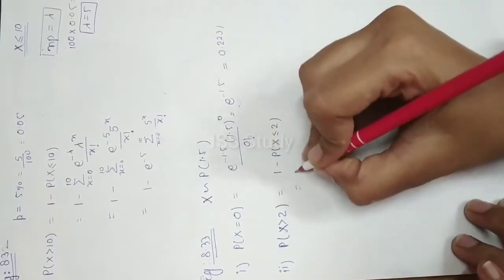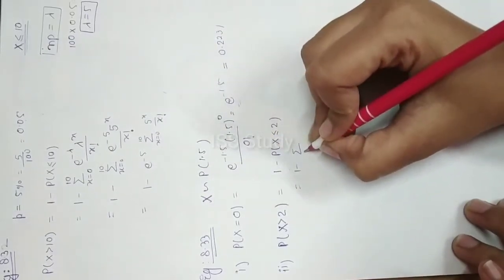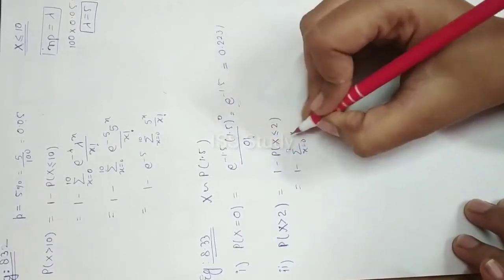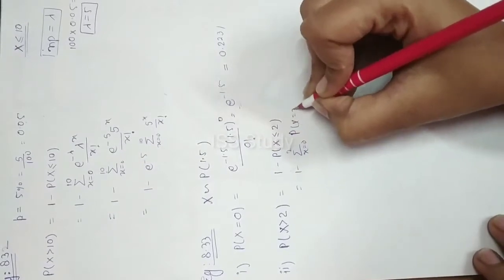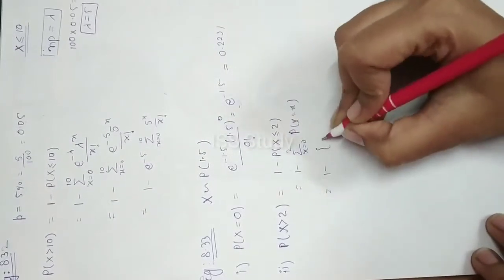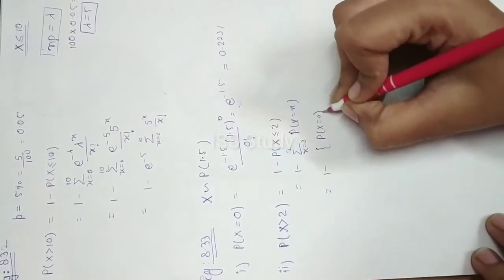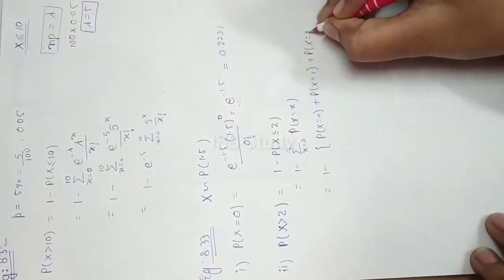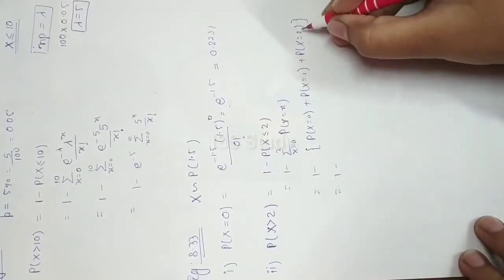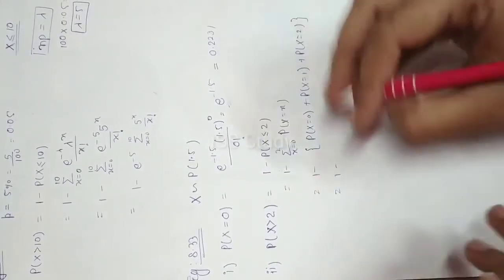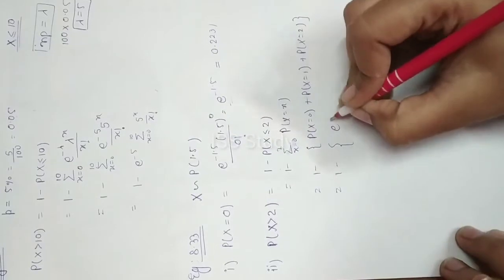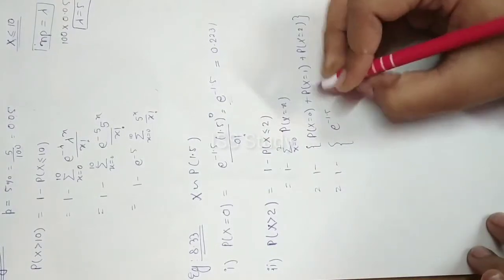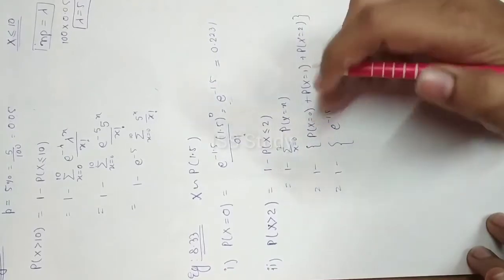So we write 1 minus the summation for x from 0 to 2, which expands to 1 minus [P(x=0) + P(x=1) + P(x=2)]. Substituting into the Poisson formula with lambda equal to 1.5, we calculate each term: e to the power minus 1.5 times 1.5 to the power x divided by x factorial for x equals 0, 1, and 2.